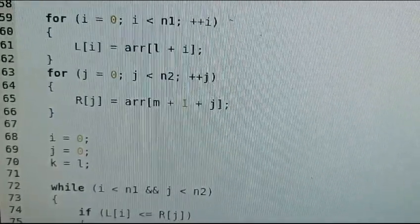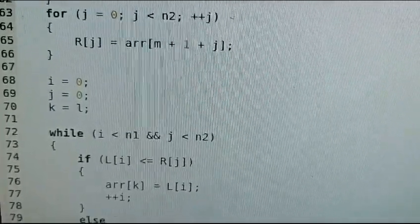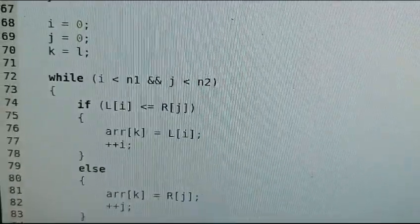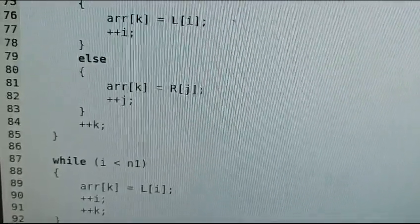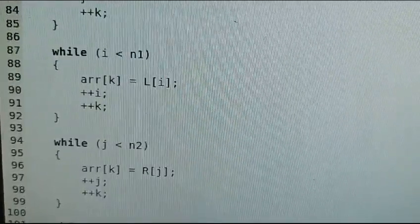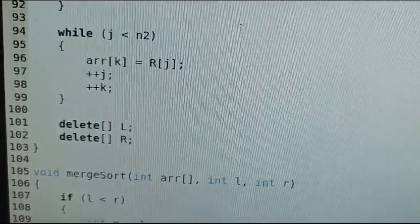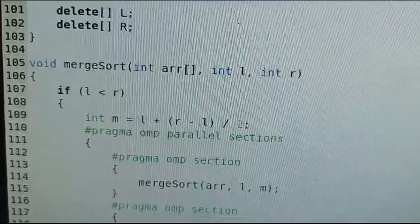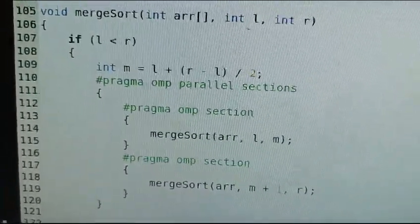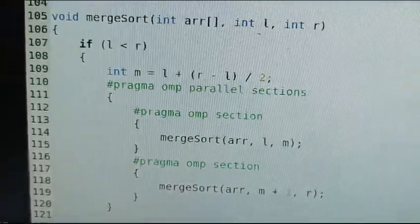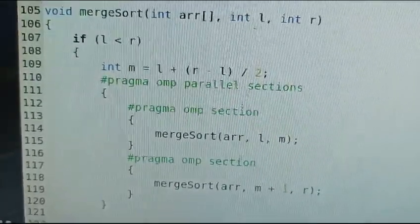Declaring all the variables required, then divide the list into two halves using the for loops. Next is the while loop for the left half and the second while loop for the right half. Repeat this process until all the elements get sorted.